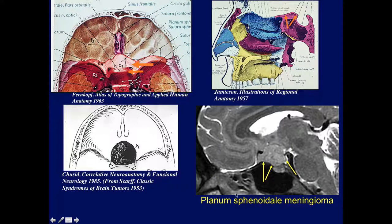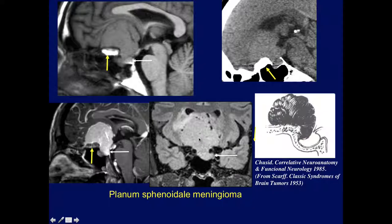Here's a larger planum sphenoidale meningioma that has grown posteriorly, now overlying the sella — still really a planum meningioma because it started over here. They get larger. Here's an even larger one with tremendous hyperostosis. This tumor has now invaded and is lying on top of the pituitary gland on the coronal. See the tumor here — here's the pituitary — with all the hyperostosis and irregularity of the bone. The tumor over the planum has filled part of the pituitary fossa.